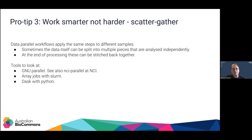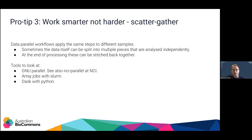There are real limits to how many cores it makes sense to scale across. Another pattern to consider for your workflow is the scatter-gather pattern. Typically data-parallel workflows apply the same steps to different samples, but sometimes the data itself can be split into multiple pieces that are analysed separately — that's scattering. At the end of processing, you bring those all together — gathering — for the final outputs. Tools to consider include GNU parallel, nci-parallel at NCI, Slurm array jobs, and for Python-based workflows, tools like Dask.